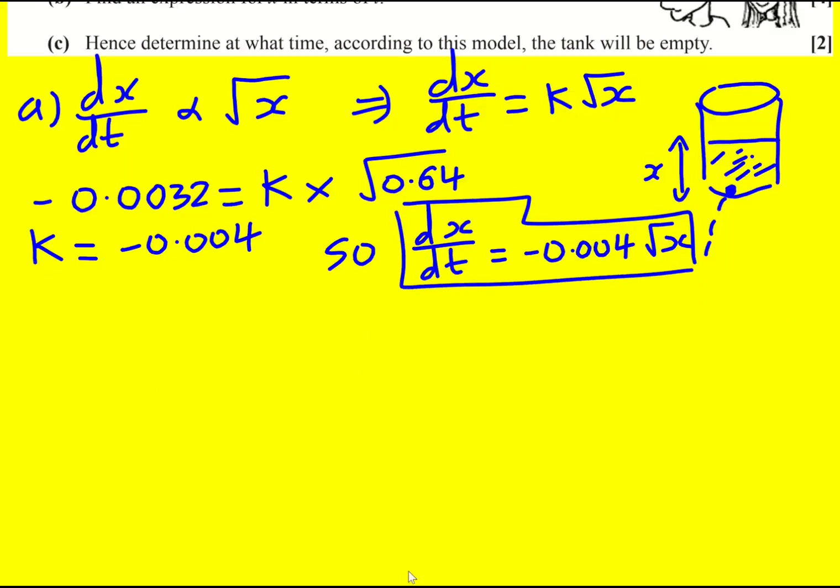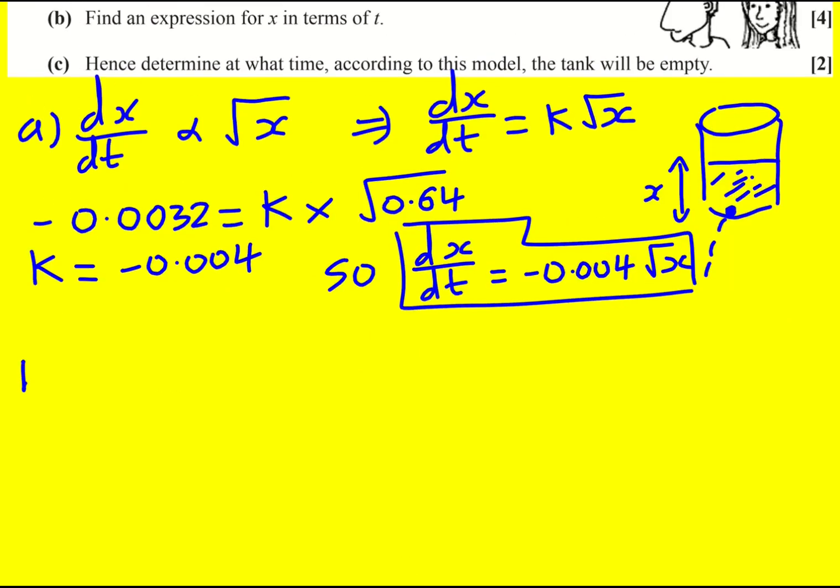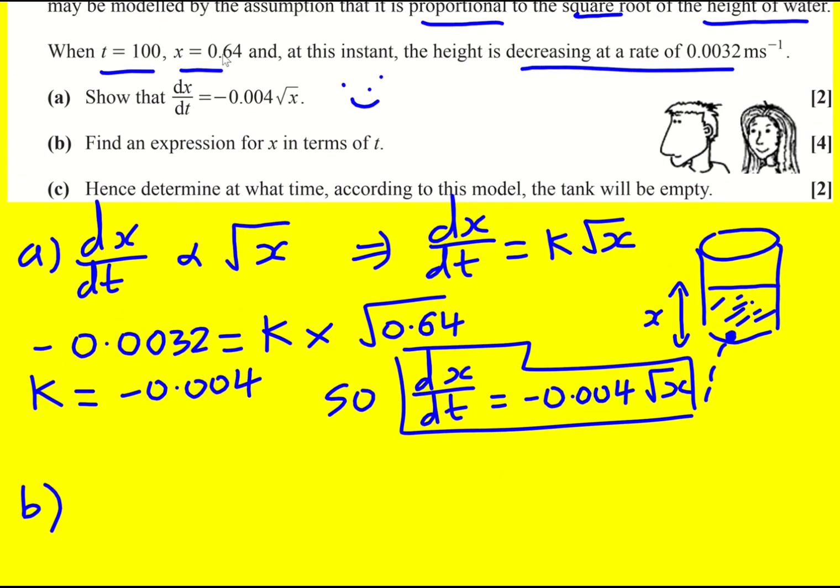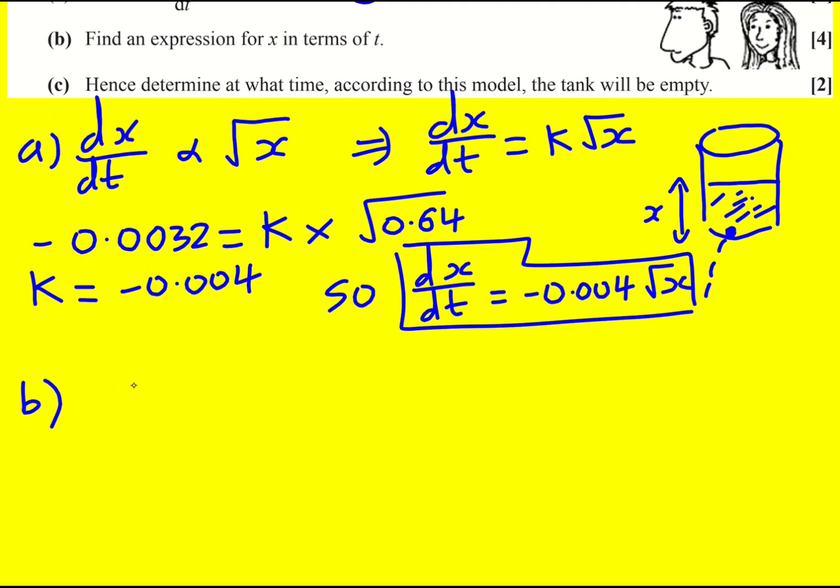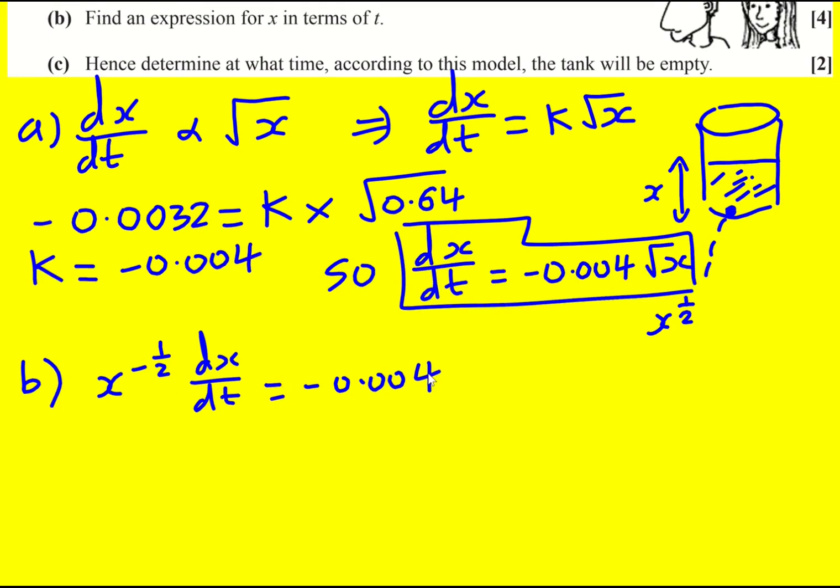Now we're asked to find an expression for x in terms of t, so that's going to involve solving this differential equation. Don't forget we've got this other condition when t is 100, x is 0.64, we've not yet used that. So as things stand, I've got, actually this is x to the half. And so I've got a differential equation, and the right hand side is a function of x, so I can't just integrate it directly. What we have to do is do separation of variables and get it onto the left hand side, which can involve dividing by x to the half, which is going to give us x to the minus a half dx by dt, and that is equal to minus 0.004. Okay, now we can integrate.